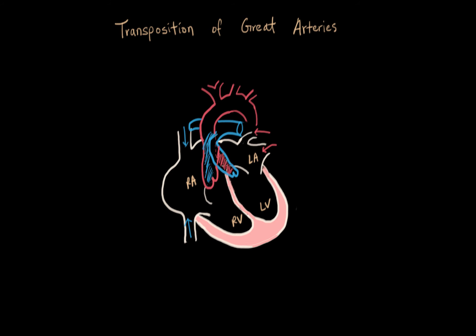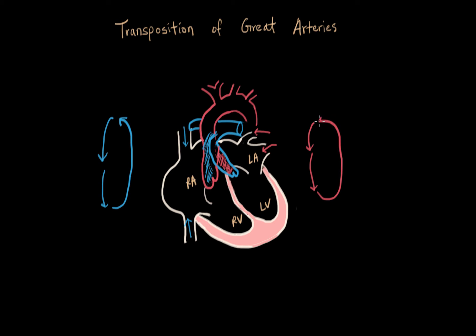The color inside the vessel does not match the color of the vessel I've drawn. If you follow this path, you realize we don't have a normal circuit. We actually have two completely closed-off circuits. The body goes to the right side and right back to the body — a blue cycle — through the right atrium, right ventricle, and back into the aorta. Blood never goes through the lungs, never gets oxygenated, and just stays blue. On the other side, blood from the lungs comes back red, through the left atrium and left ventricle, and goes back out through the pulmonary artery to the lungs again. So we have a red cycle and a blue cycle with no mixture.